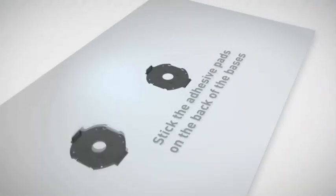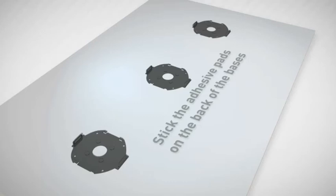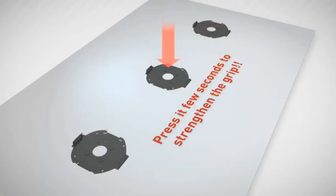Stick the adhesive pads on the back of the basses. Align the three basses on the back side of the panel. Place one bass at each end and the third in the middle. Check that the three basses are all aligned to receive the F-ribbon. Press it a few seconds to strengthen the grip.